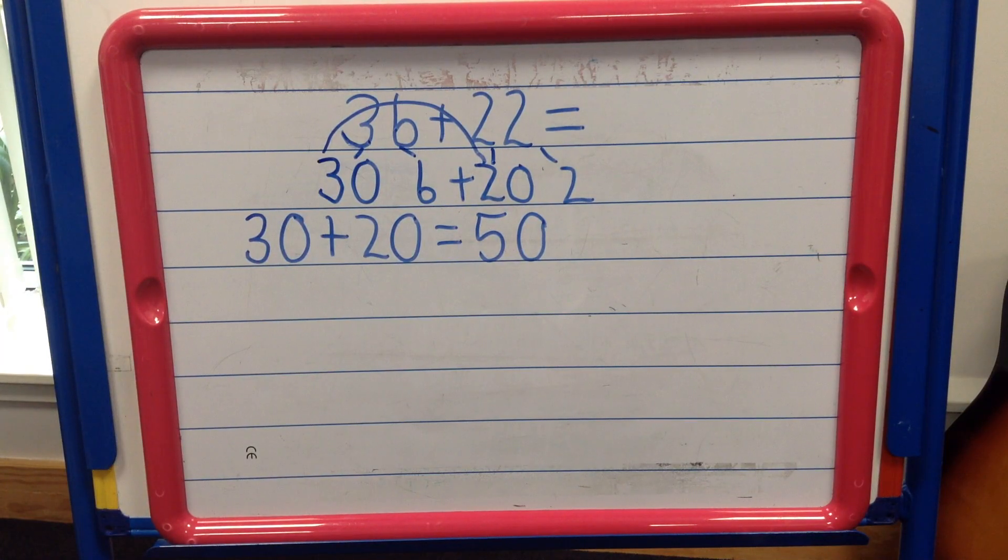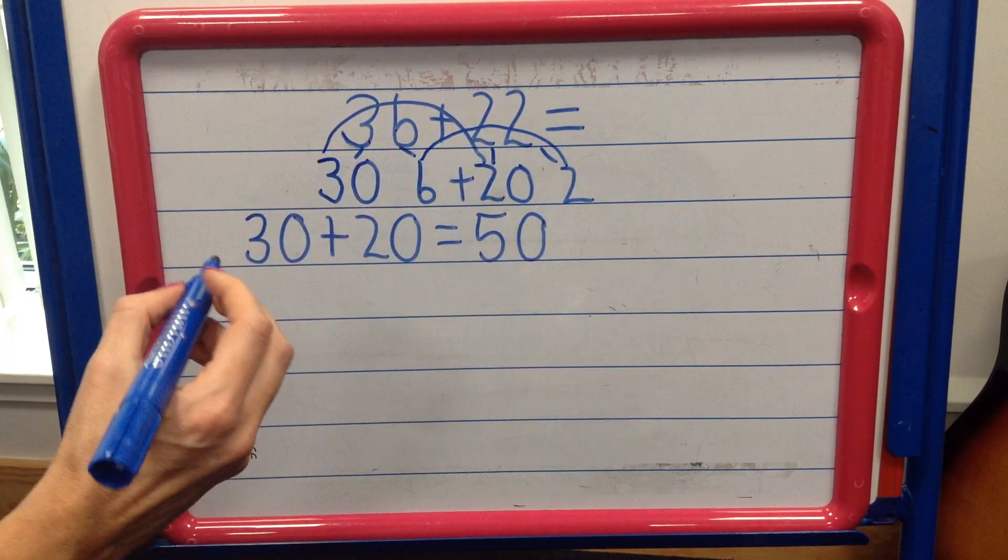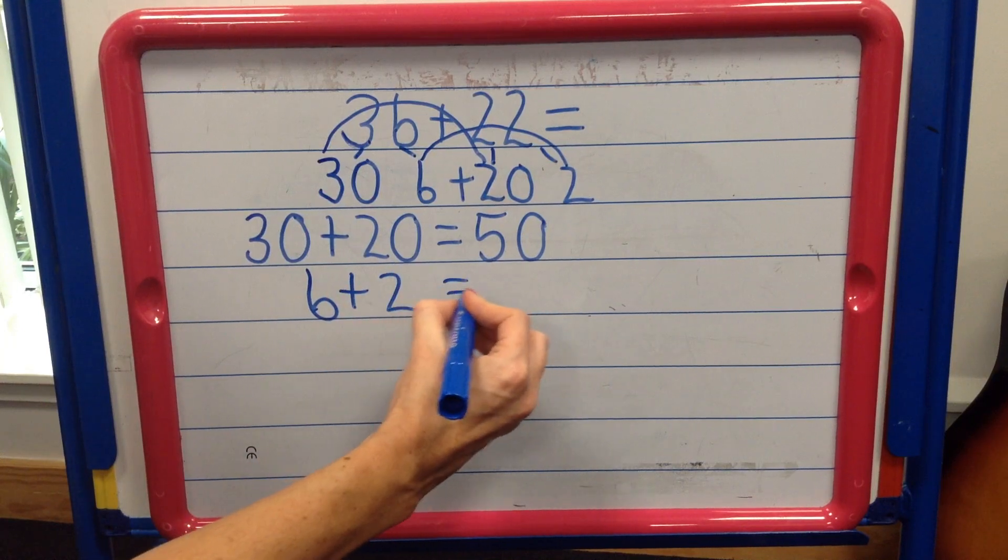Step 3. In step 3, we add all of our ones together. Watch. 6 ones, add on 2 more ones, gives us 8.